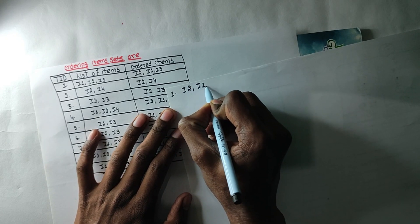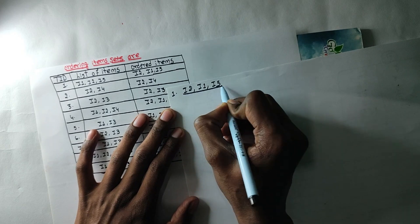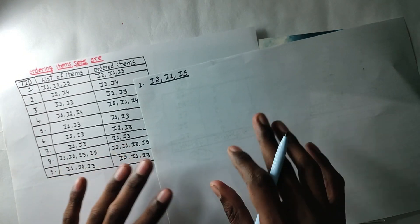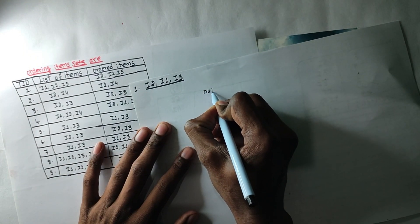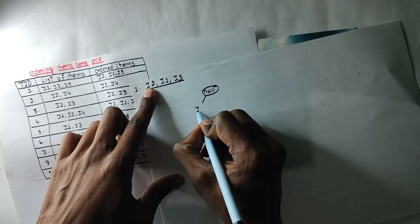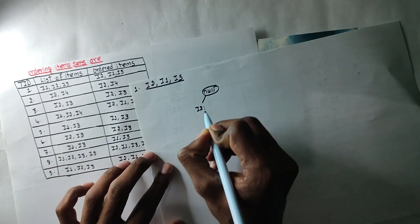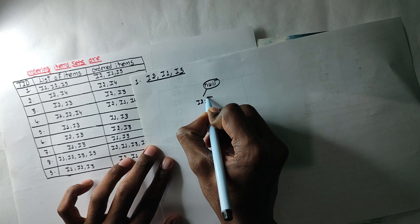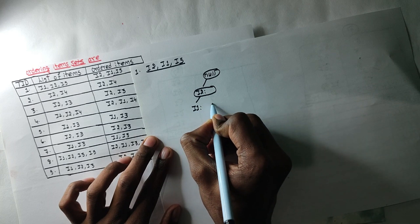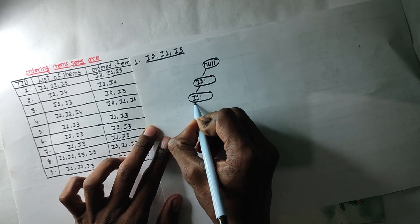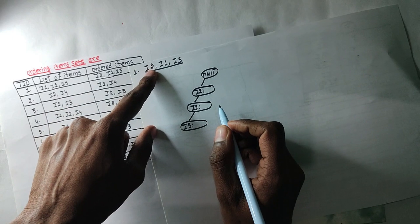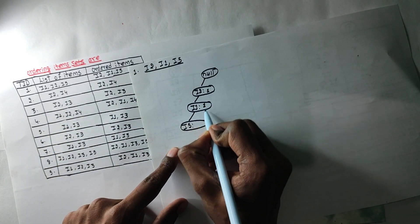I2, I1, I5. Transition number 1. We will add 1 point. We will add 3 diagrams. We will add 4. We will add 3. I2, I2, I2, I2. I1, I1, I1, I1.